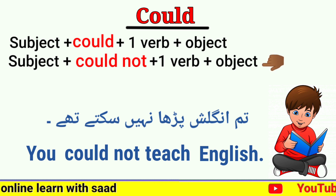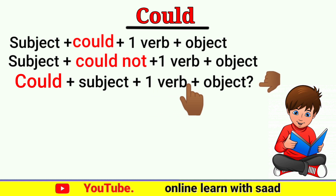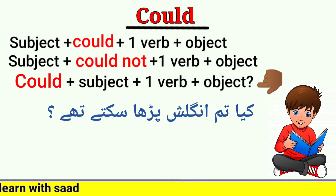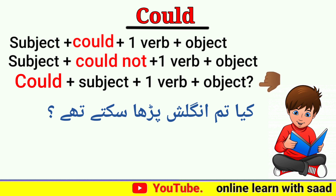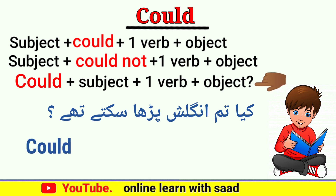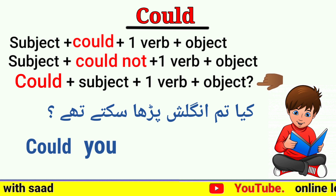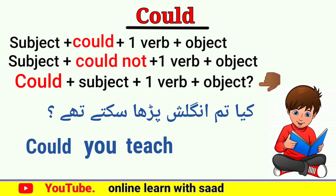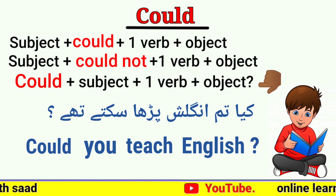اب چلتے ہیں could modal کی interrogative sentences کی طرف۔ Interrogative structure: Could + subject + first form of verb + object + question mark۔ مثال: 'کیا تم انگلش پڑھا سکتے تھے؟' — پہلے could، پھر subject 'تم' یعنی you، پھر verb 'پڑھانا' یعنی teach، پھر object 'انگلش' — Could you teach English?